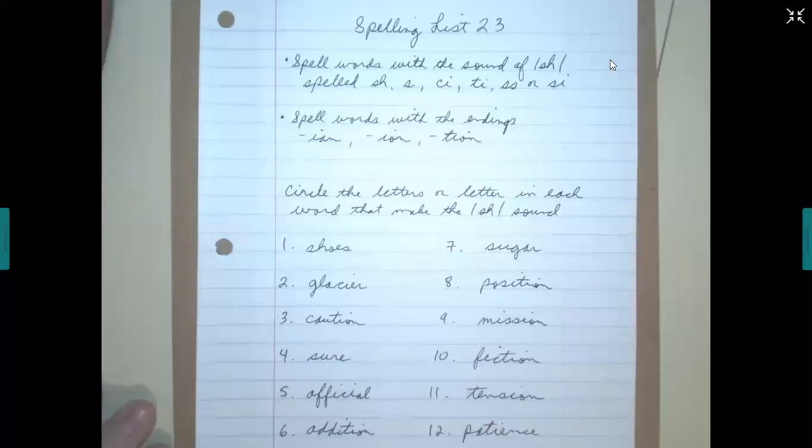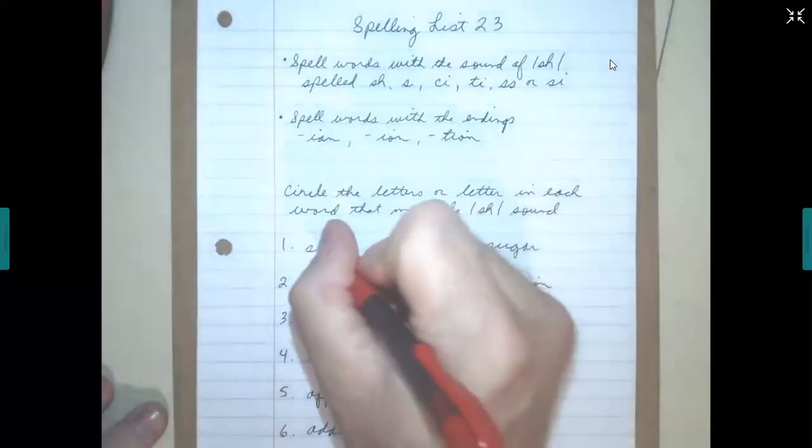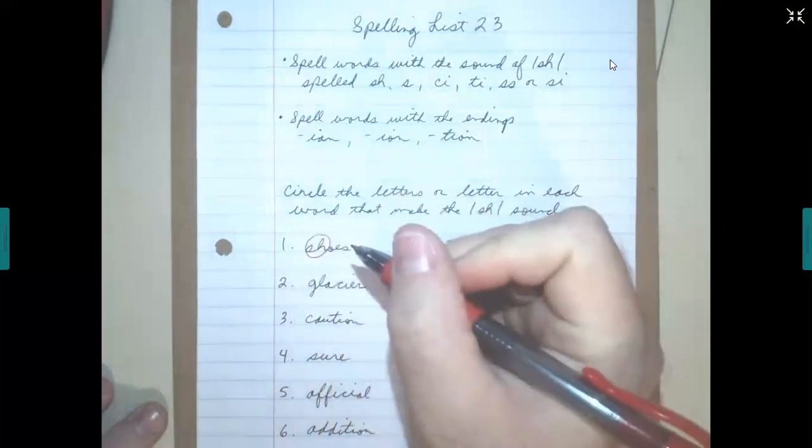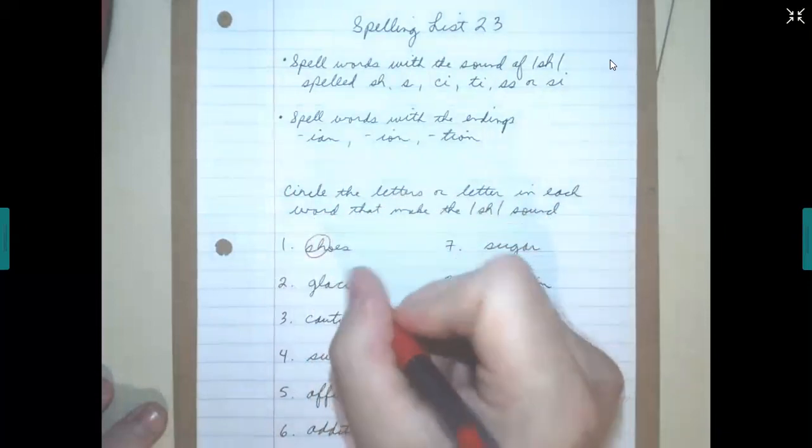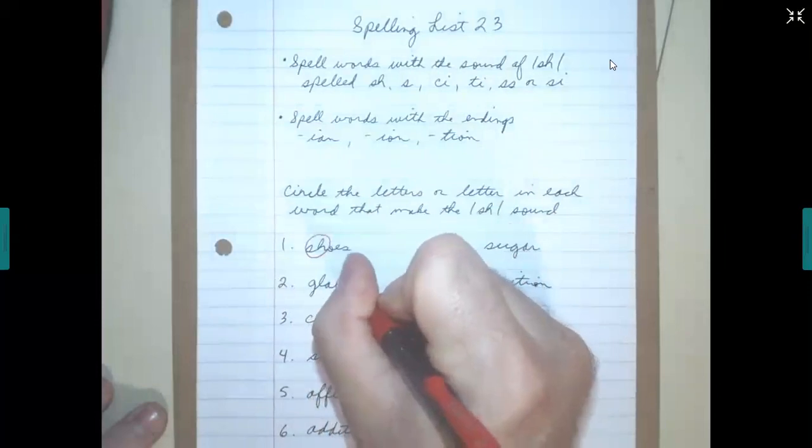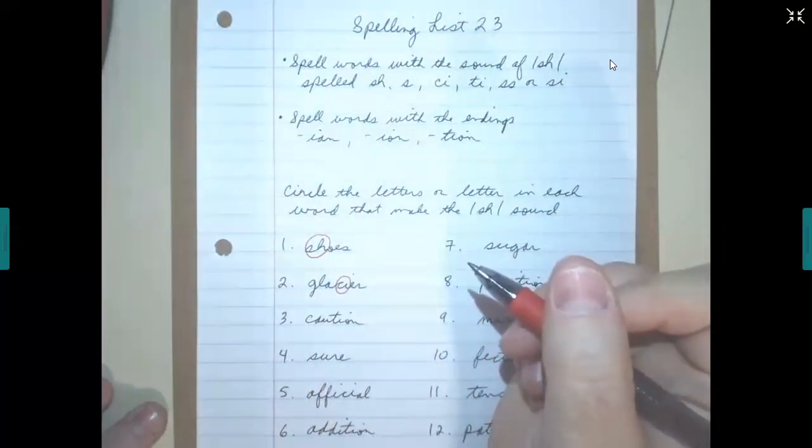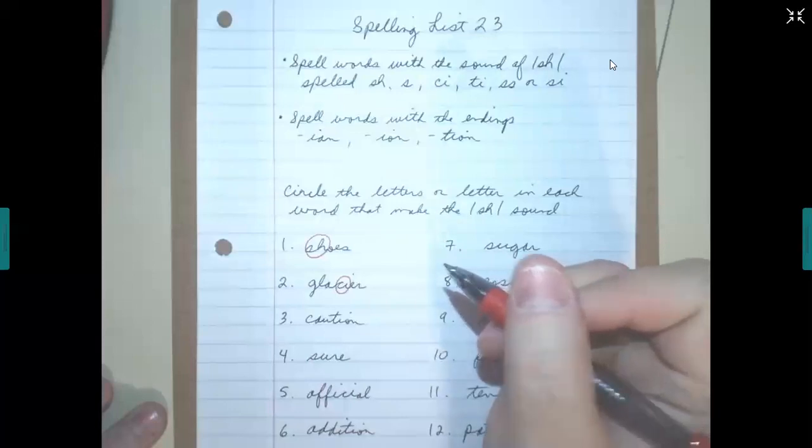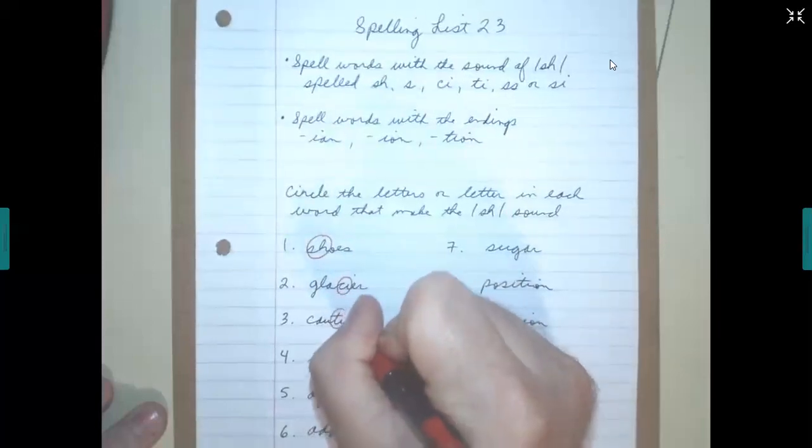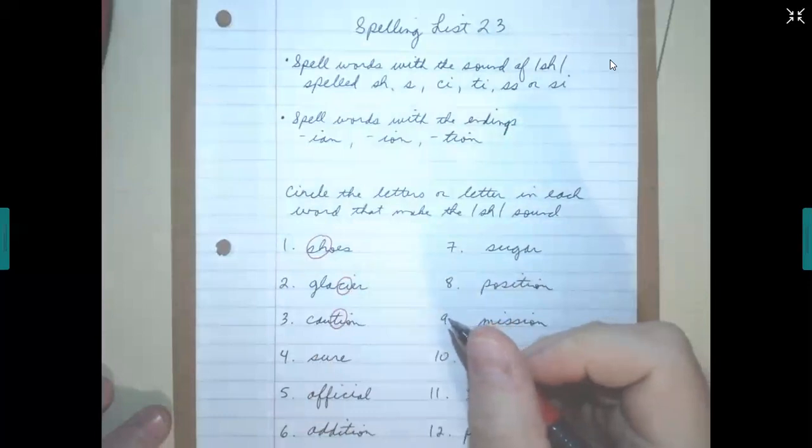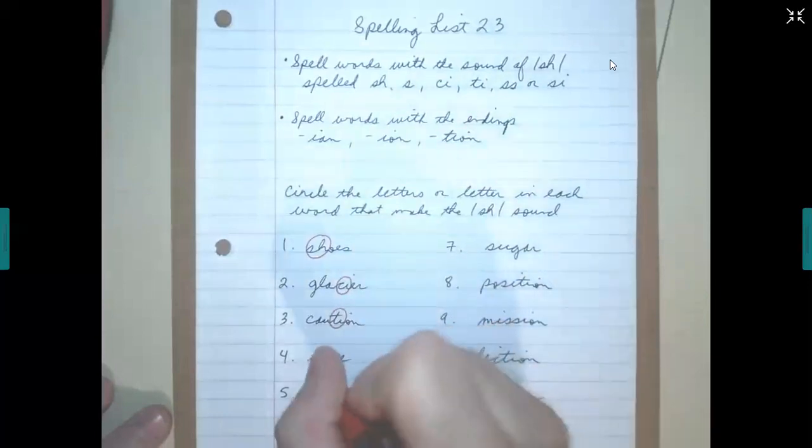Let's circle the letters in each word that make the sh sound. The first word we have here is shoes, so let's circle the S-H. Glacier, the C-I. Caution, the T-I. Sure is just the S. Number five, official, C-I.